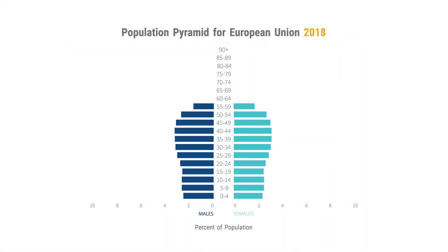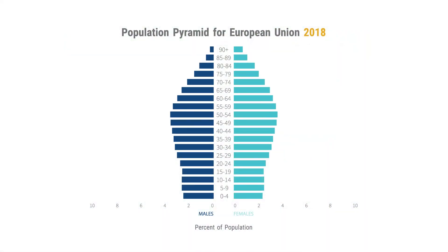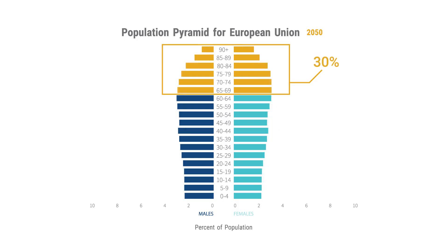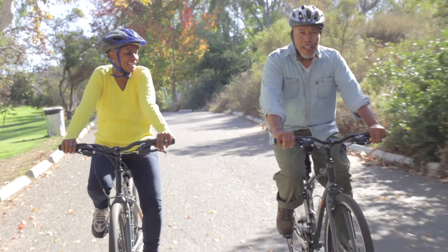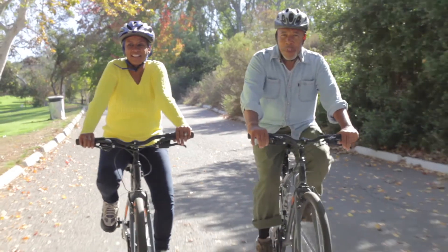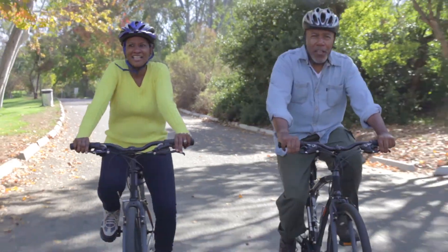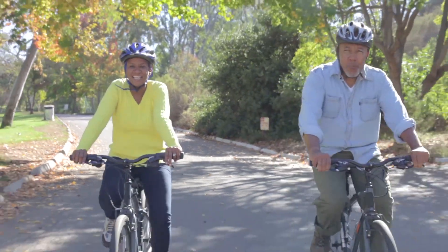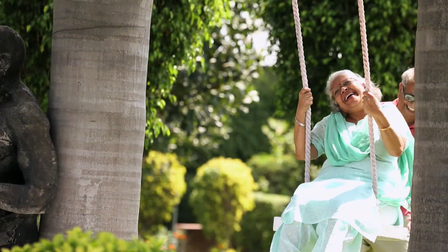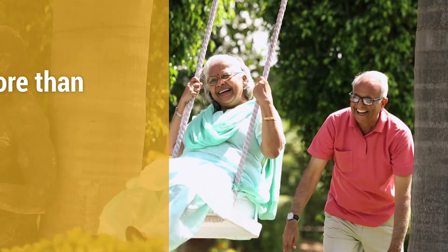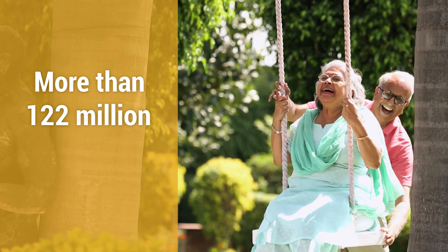In the European Union, the proportion of the population ages 65 and older is expected to increase from 20 percent in 2018 to 30 percent in 2050. Between 2016 and 2050, the number of pensioners ages 65 and older is expected to increase from just under 83 million to more than 122 million.